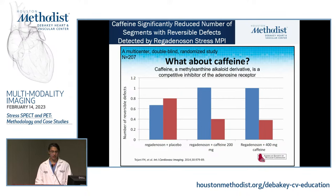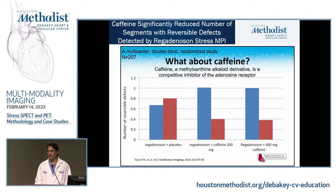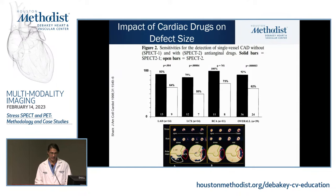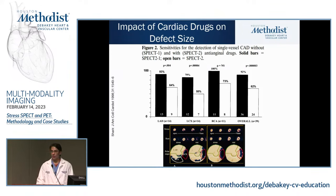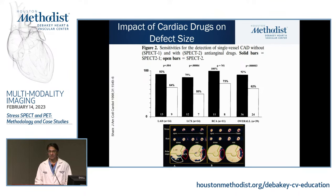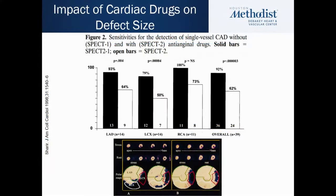Regarding caffeine — a common question — you must refrain from caffeine at least 12 hours before the stress test. Data from patients stressed with and without caffeine on board shows that caffeine can significantly reduce the sensitivity of the test. It's also important that anti-ischemic medicines on board can reduce sensitivity. So if a patient comes to the ER never previously diagnosed and is chest-pain free, you don't want to give them beta-blockers or nitroglycerin because you'll influence the stress test in the morning.